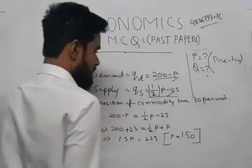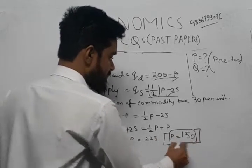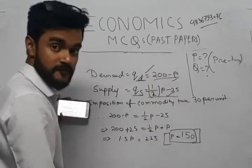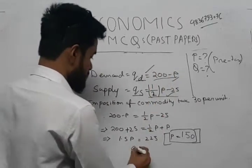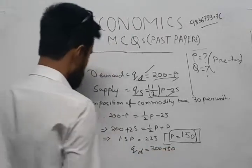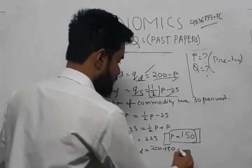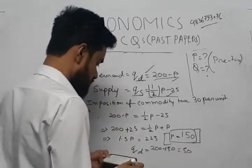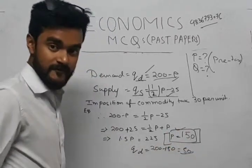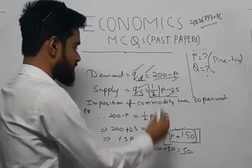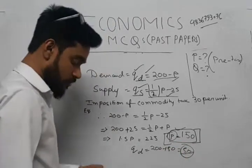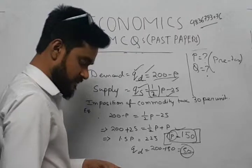Solving further, P = 150. Substituting back into the demand equation: Qd = 200 minus 150 = 50. So the equilibrium price is 150 and equilibrium quantity is 50.